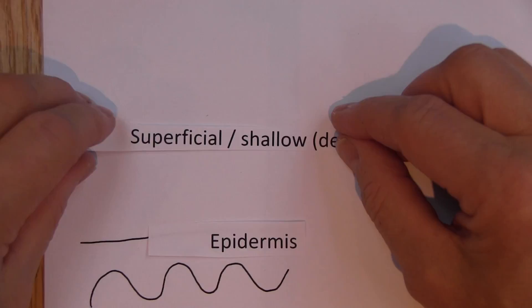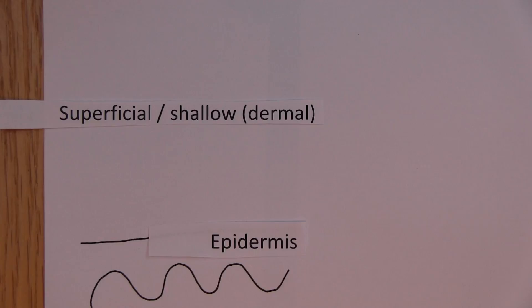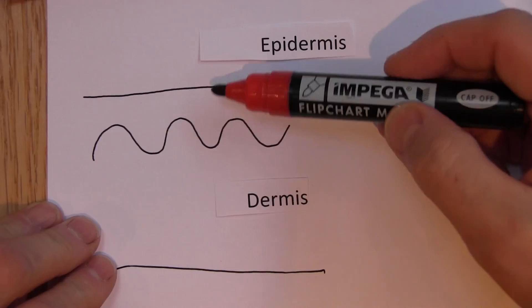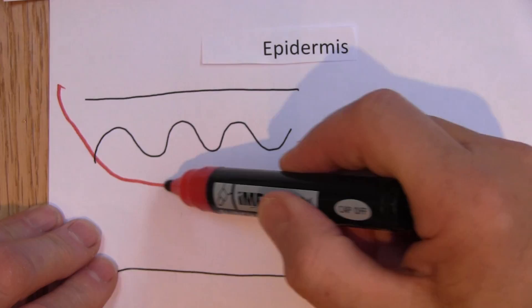Superficial, we tend to think of superficial burns affecting the epidermis. So really the better term here is shallow dermal. They're affecting the top part of the dermis. Now the area that's burnt here is going to be, we're going to lose all of the epidermis and they're partial thickness, so they're affecting part of the thickness of the dermis.